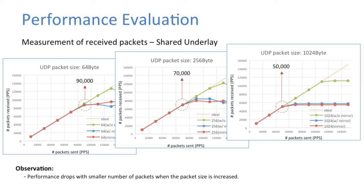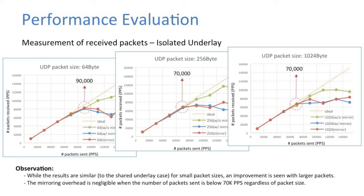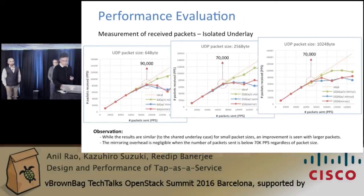This slide shows the performance measurement of isolated underlay. While results are similar to the shared underlay for small packet sizes, an improvement is seen with larger packets. The mirroring overhead is negligible when the number of packets sent is below 70k pps, regardless of packet size. The isolated underlay shows that production traffic is not affected by mirrored traffic.